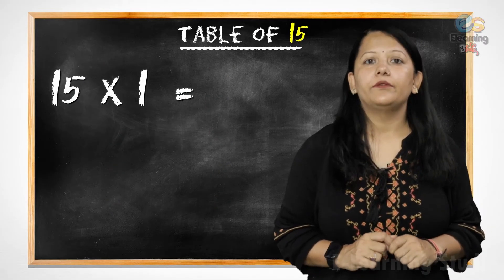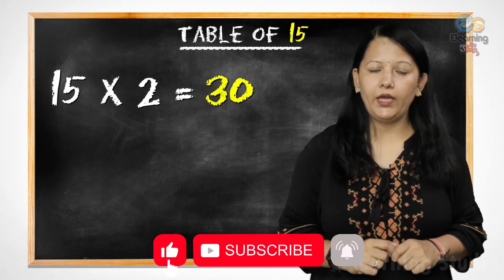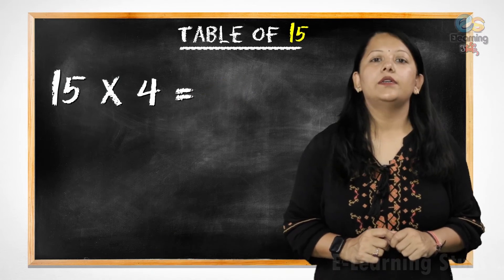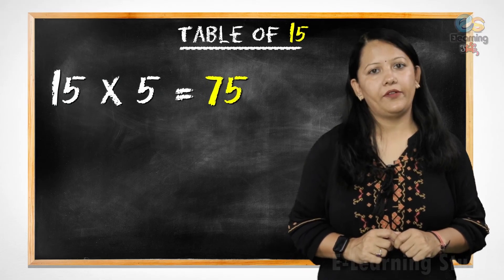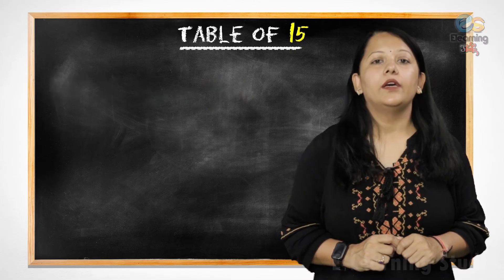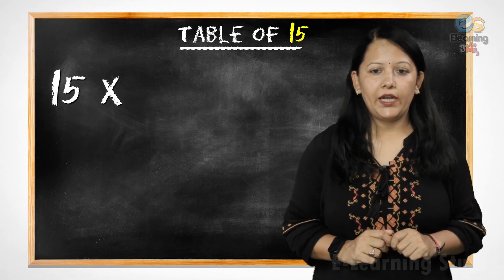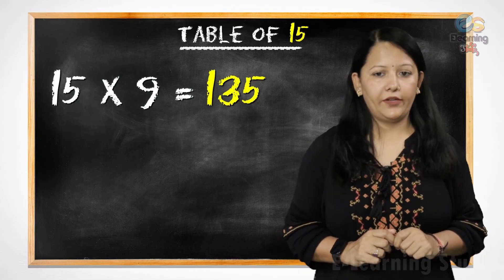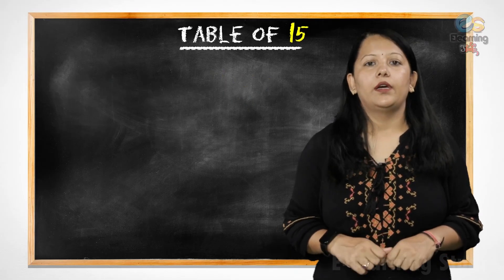15 ones are 15. 15 twos are 30. 15 threes are 45. 15 fours are 60. 15 fives are 75. 15 sixes are 90. 15 sevens are 105. 15 eights are 120. 15 nines are 135. 15 tens are 150.